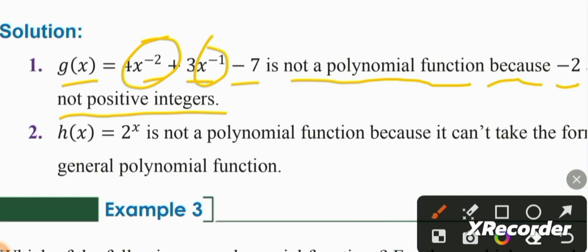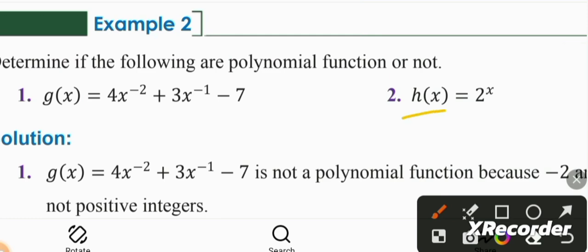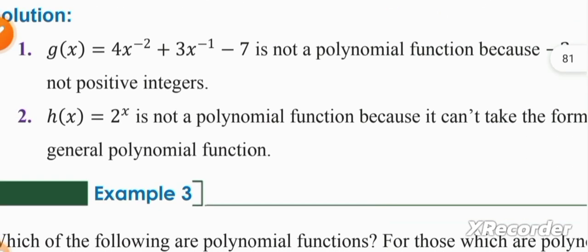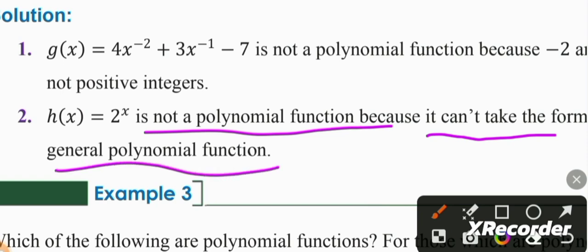Next, h of x equals 2 raised to the x. Looking at this function, it cannot take the form of the general polynomial function P of x, so h of x is not a polynomial function because it cannot be written in the general polynomial form.